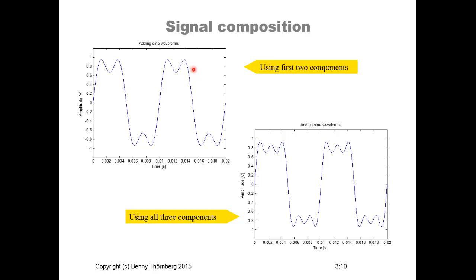And then you add three components, all three of them, and they start to look more and more like a square wave. And if you would add maybe like five or ten of these sine wave components with the right combination, you could have a representation that would very well look like a square wave.